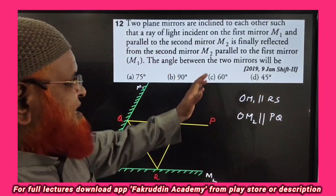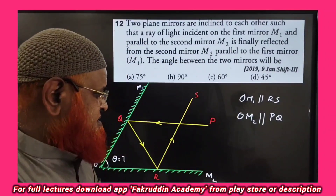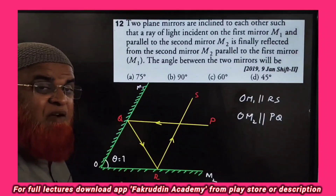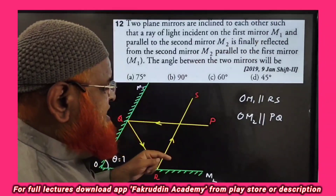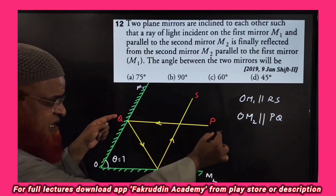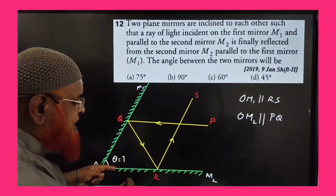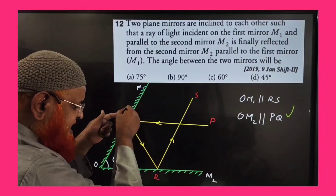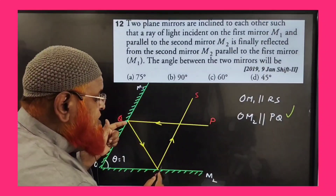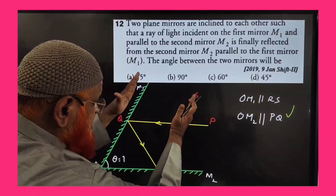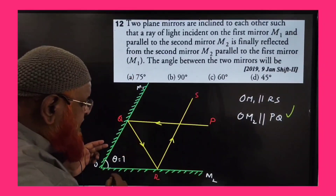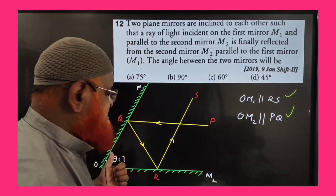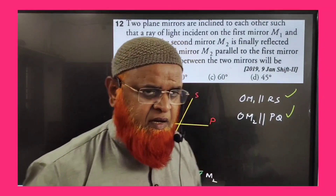My dear friends, let us discuss this problem from the previous questions. Two mirrors M1 and M2 are given, and the angle between them is theta. We have to find this angle theta. A light ray PQ enters in such a direction that PQ is parallel to M2. It takes a first reflection, then a second reflection, and comes out. While coming out, M1 and RS are parallel. We need to find angle theta.